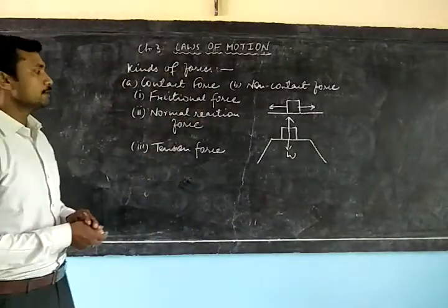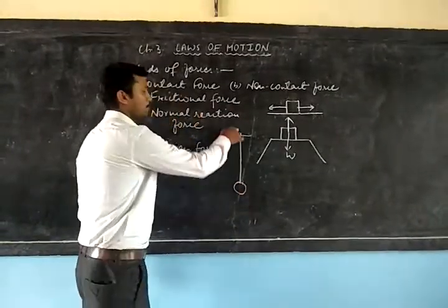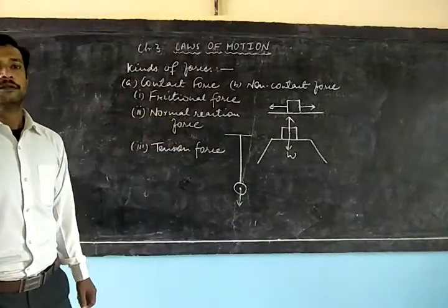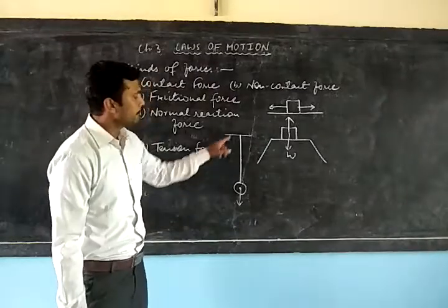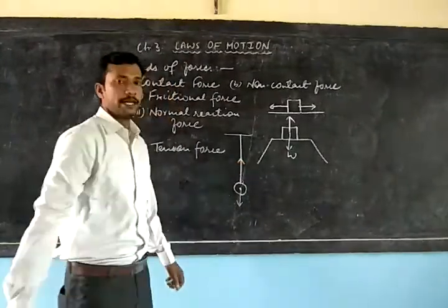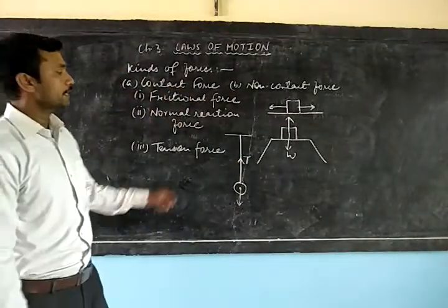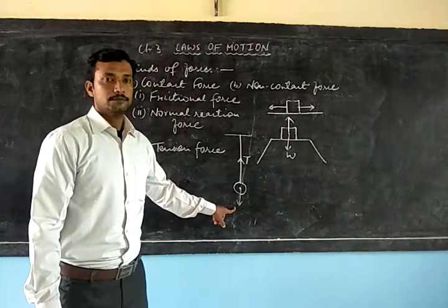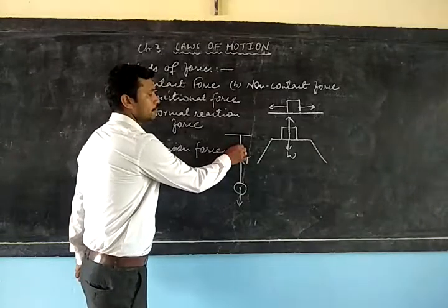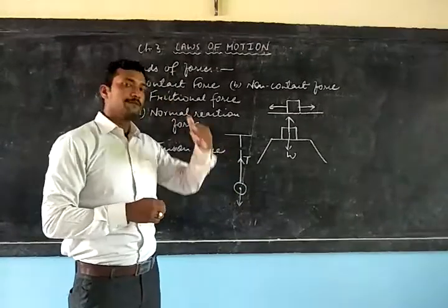Then we have tension force. Tension force is applied when you suspend a body with the help of a string. The body, because of its weight, exerts a force in the downward direction. But the string also exerts a force in the opposite — upward — direction. This force exerted by the string in the upward direction is called the tension force. You might have noticed that when a string suddenly breaks, the broken part of the string tends to move up — that is because of the tension force being exerted in the upward direction.